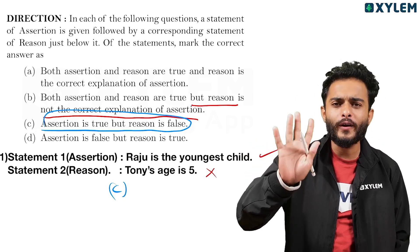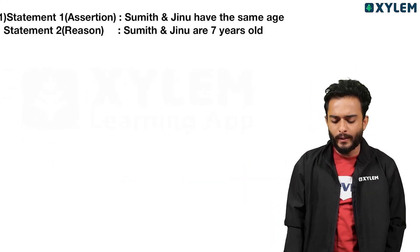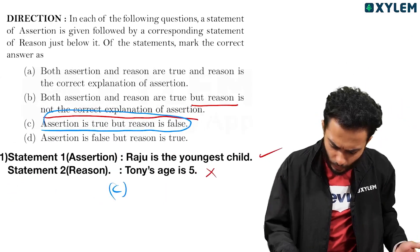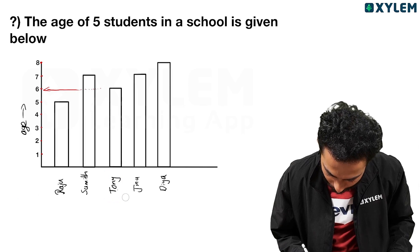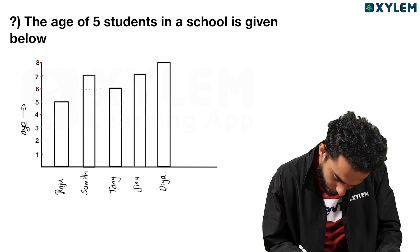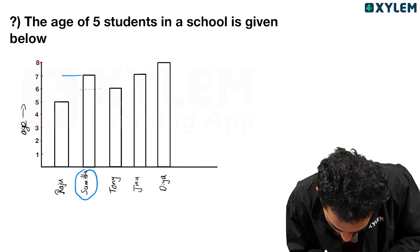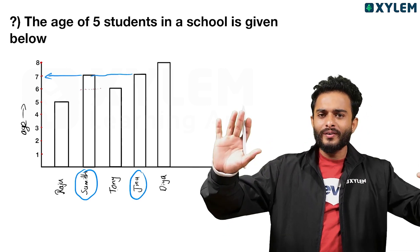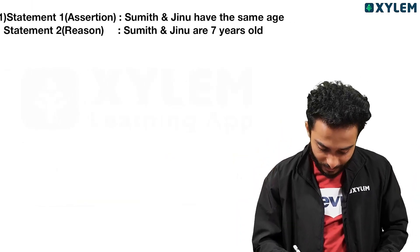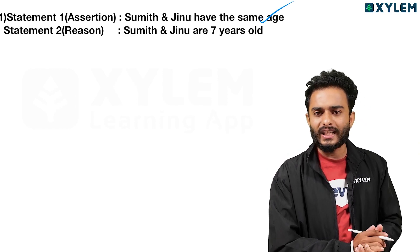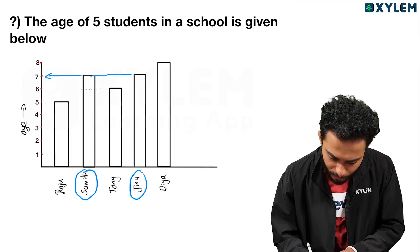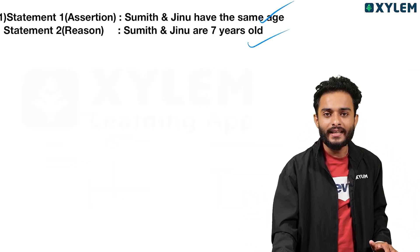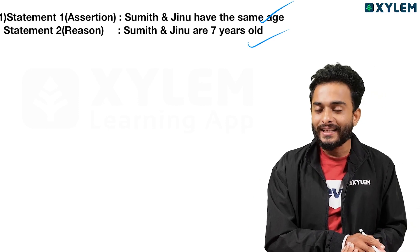Question 2 — Assertion: Sumit and Jinnu have the same age. Looking at the bar graph, Sumit and Jinnu are both 7 years old, so they are indeed the same age. Statement 2 is true.